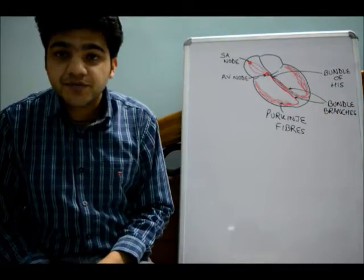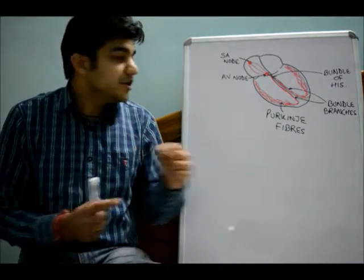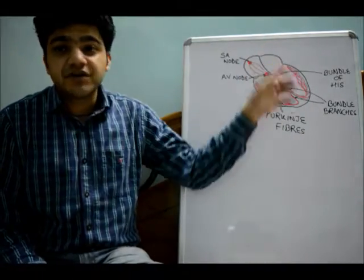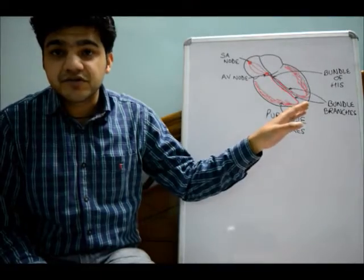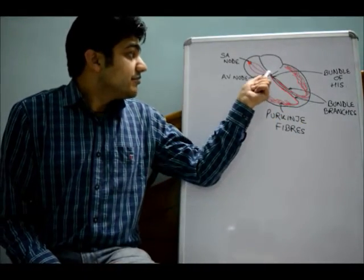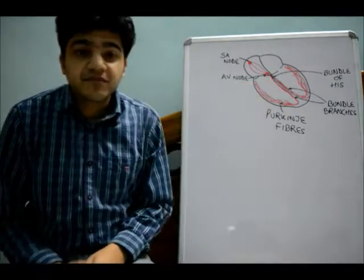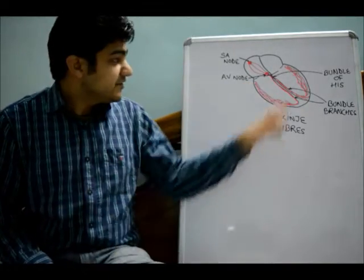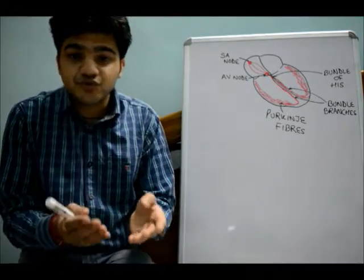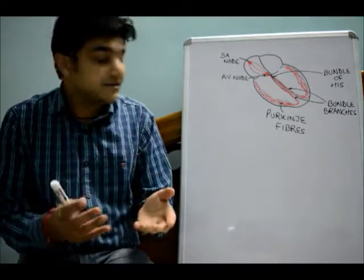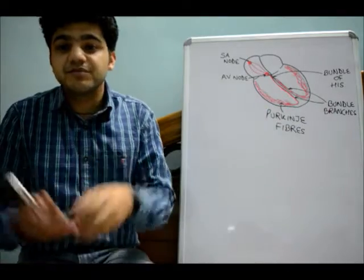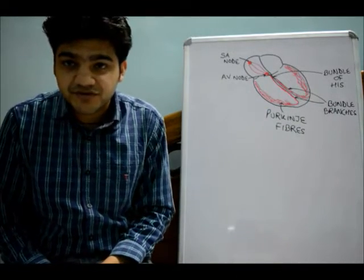The AV node is the only electrical communication between the atria and the ventricles; otherwise they are electrically insulated from each other. From the AV node there is the bundle of His which moves into the ventricles, then it divides into the right and left bundle branches, and both of them permeate by means of the Purkinje fibers all of the ventricular muscle.